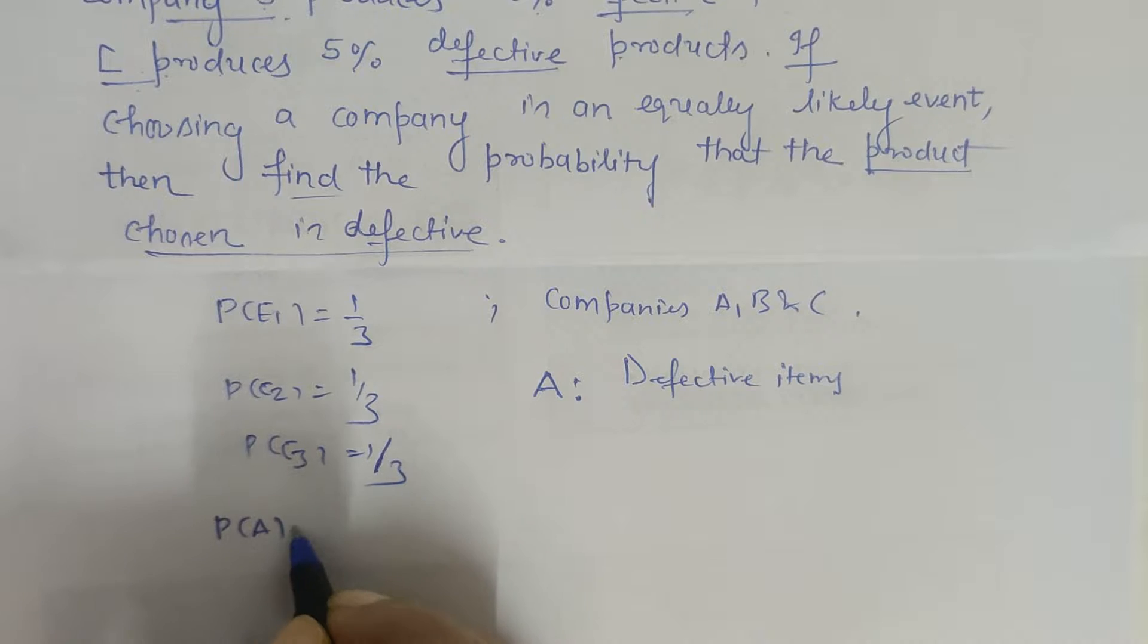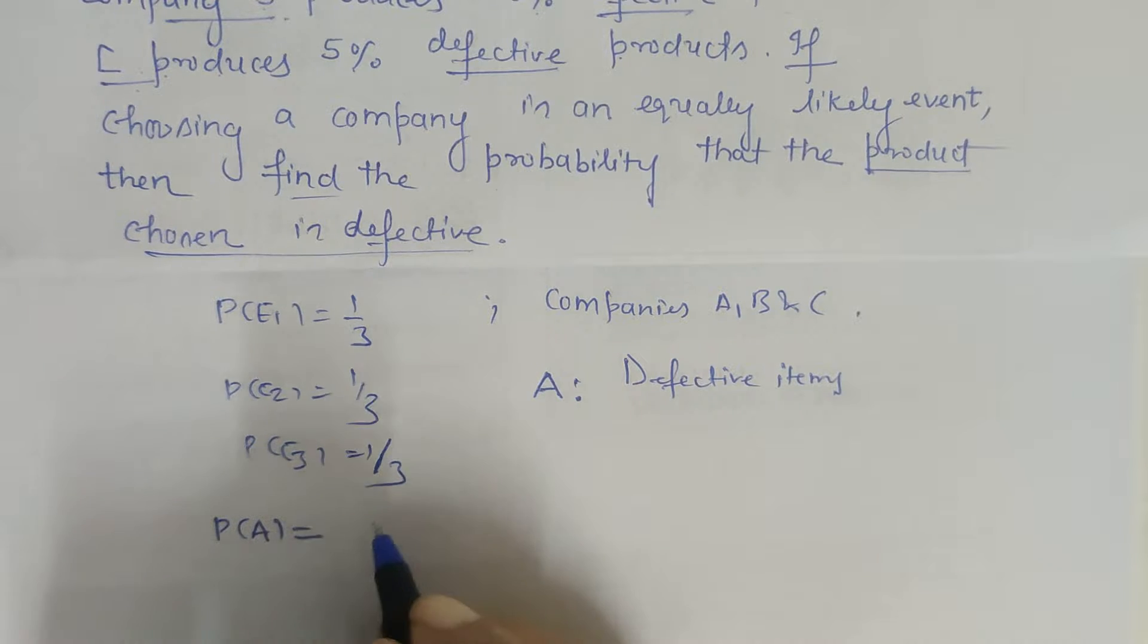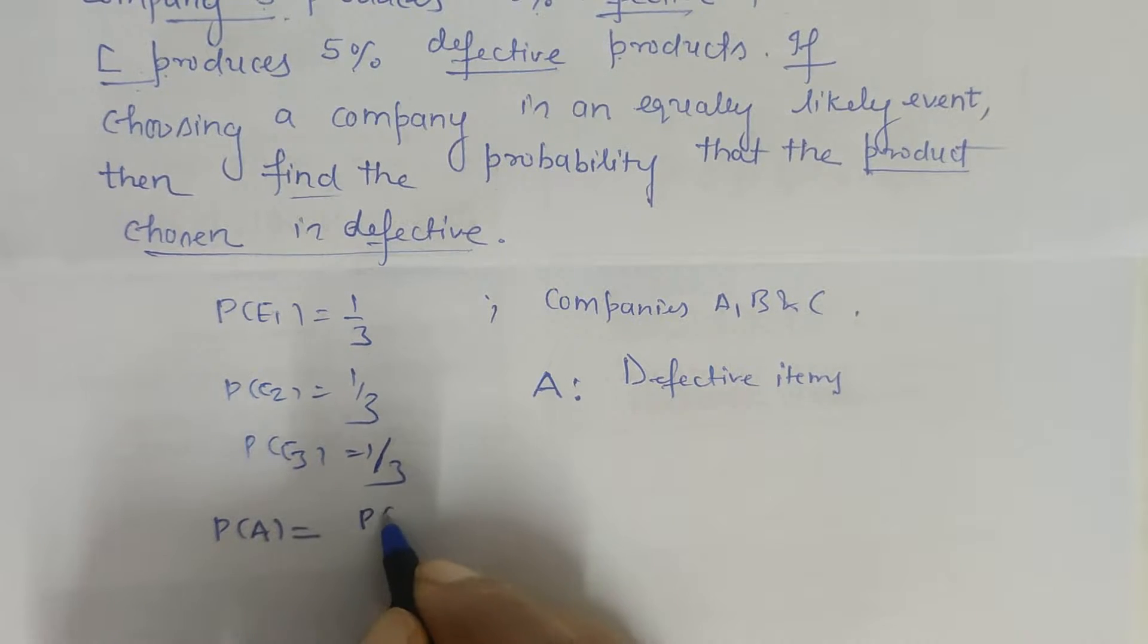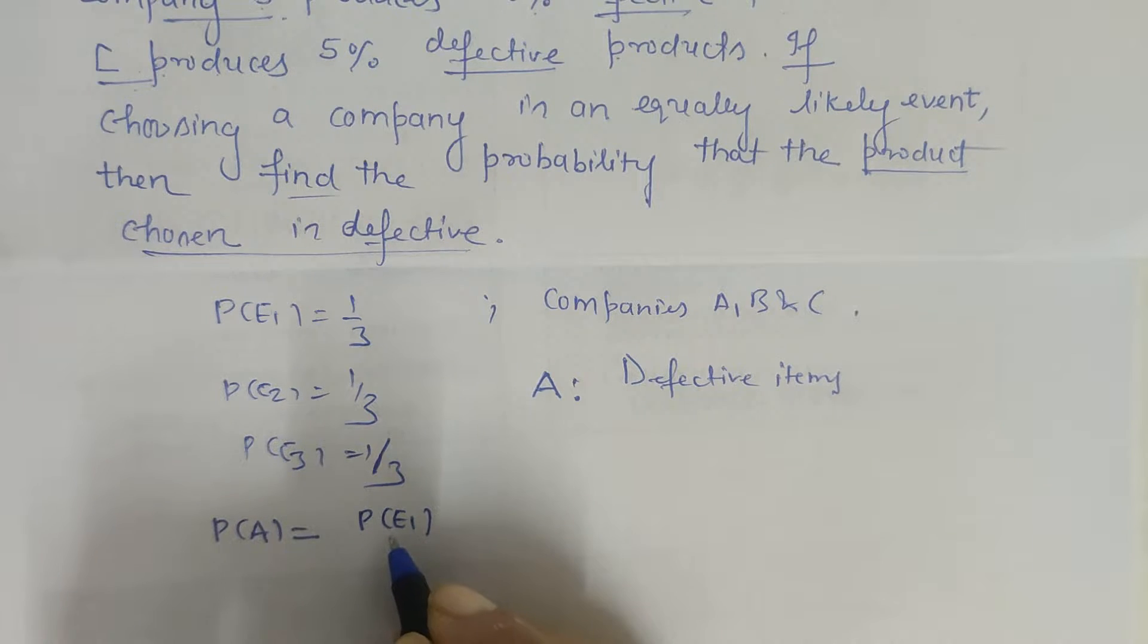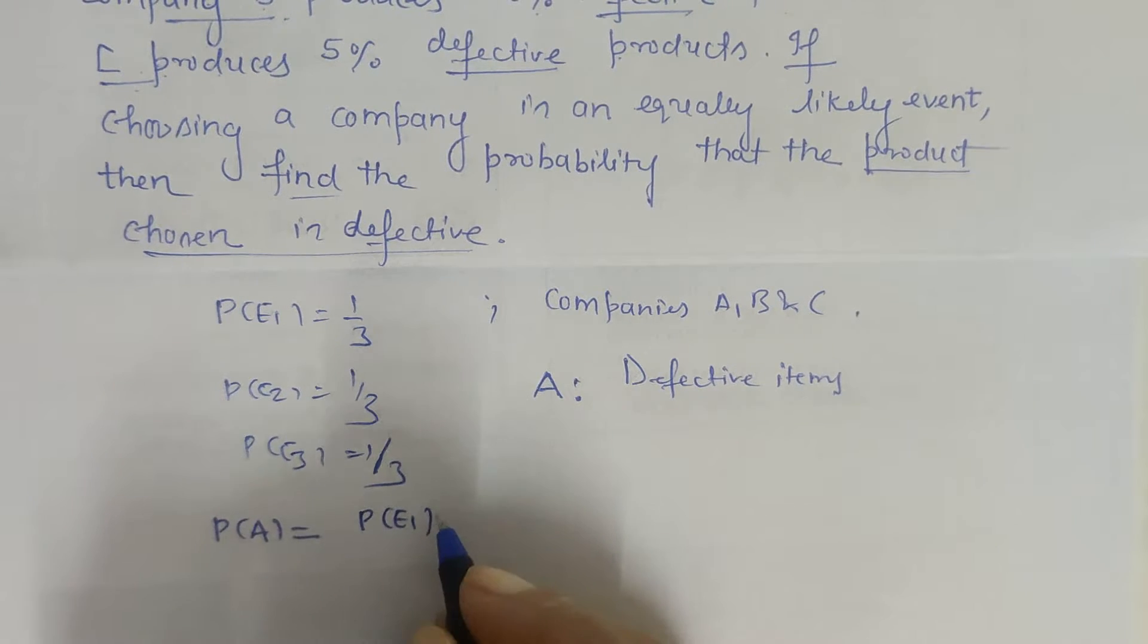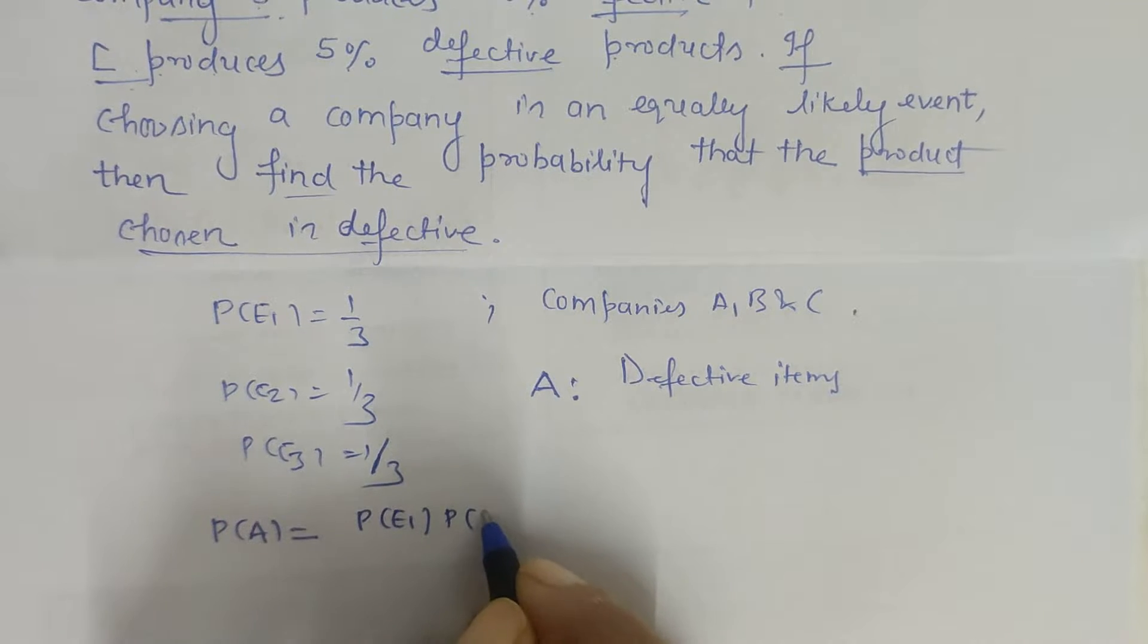That means probability of A we have to find, and for this we have to write down all the associations with respect to the defective items. First we will write probability of E1, which means probability of company A being chosen out of the three companies, times probability of A given E1.